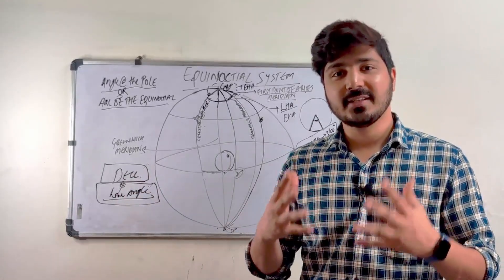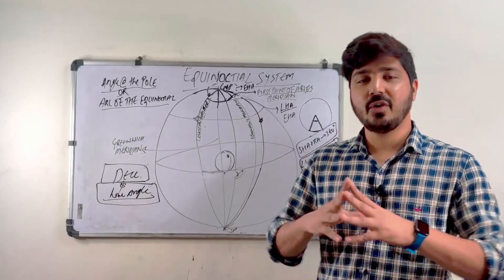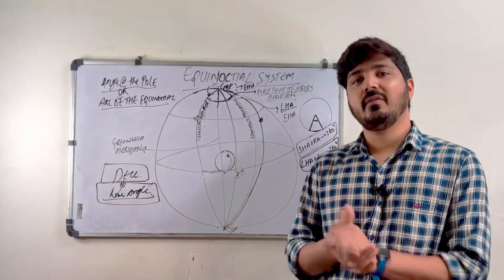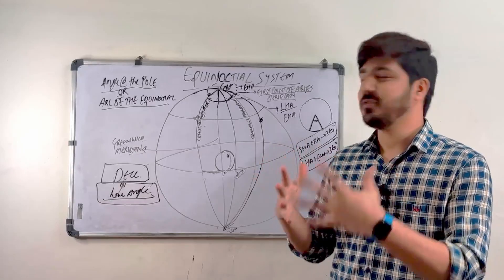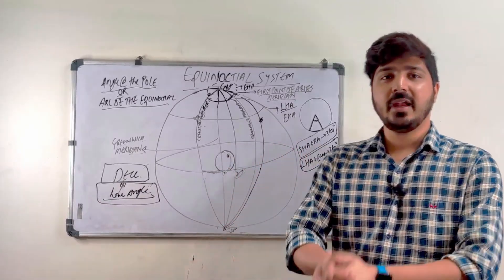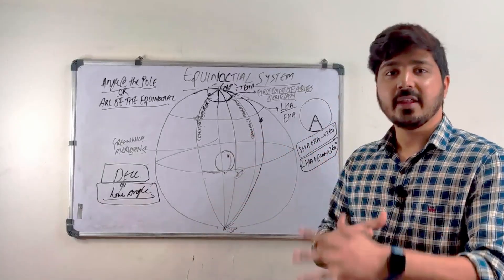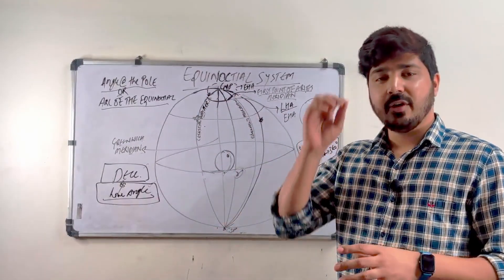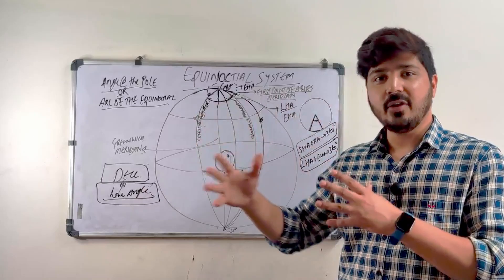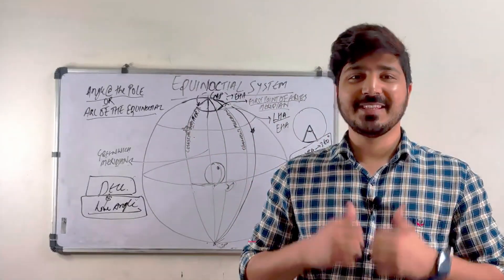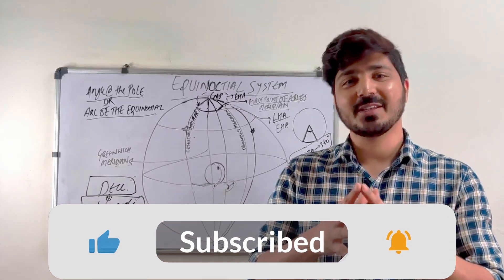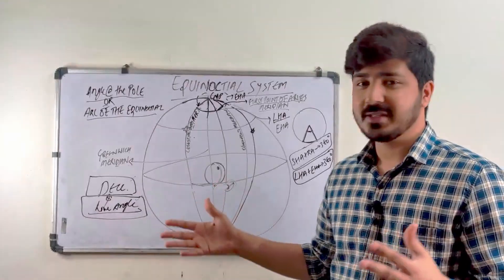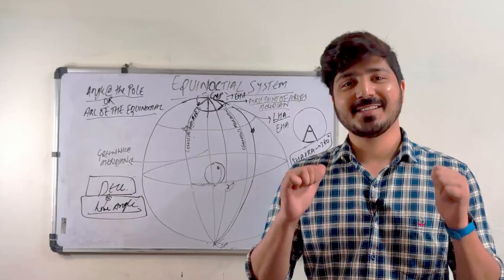That's it for this video. We have covered the equinoctial system. In the next part we are going to cover the horizon system — that will be Part 3 of this series. The reference points will be the zenith, the nadir, and the rational horizon. Watch the diagram carefully; if you remember the diagram that picture will stay longer in your memory. If you find this video helpful please press the like button and subscribe to the channel. Share this video with your friends so they can also learn navigation concepts. I will see you in the next video — this is Avilash Thakur signing off.